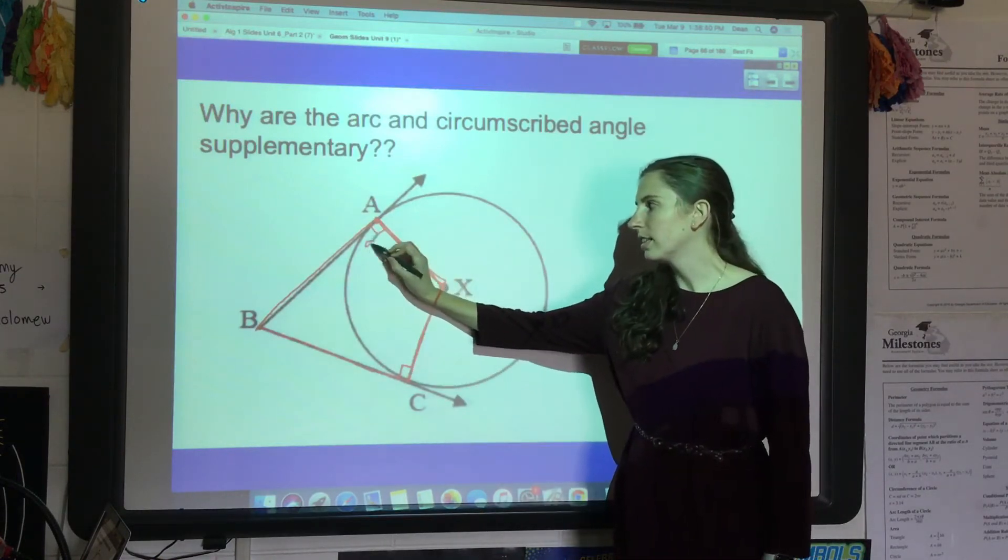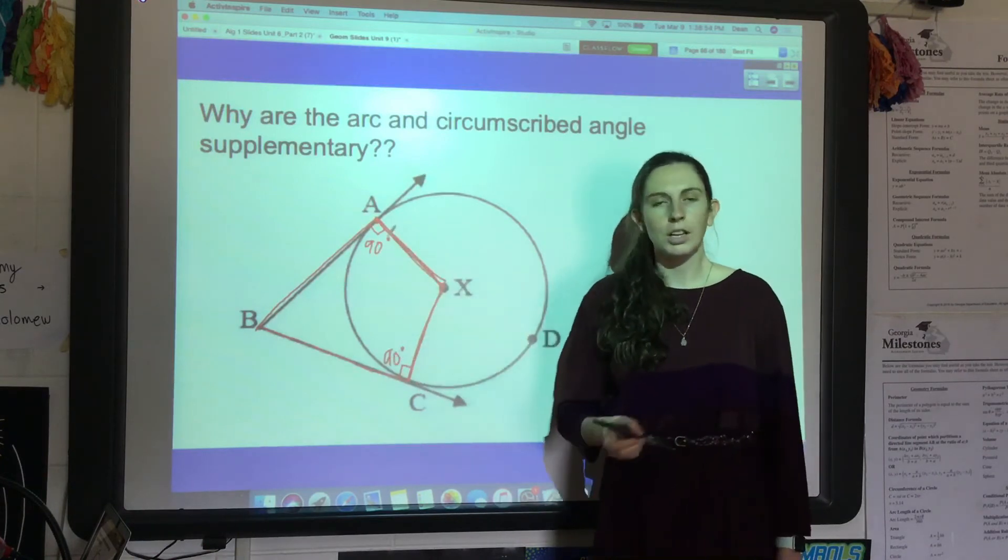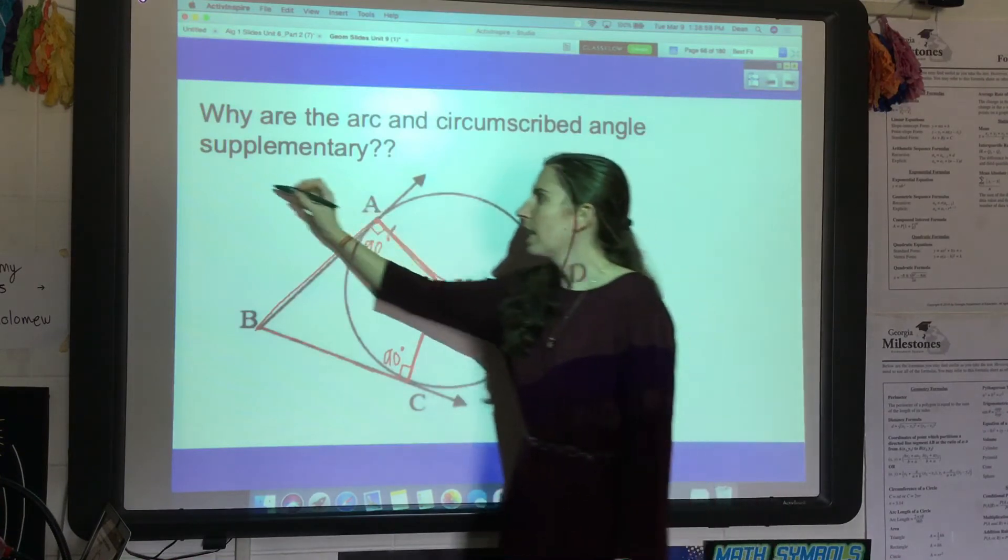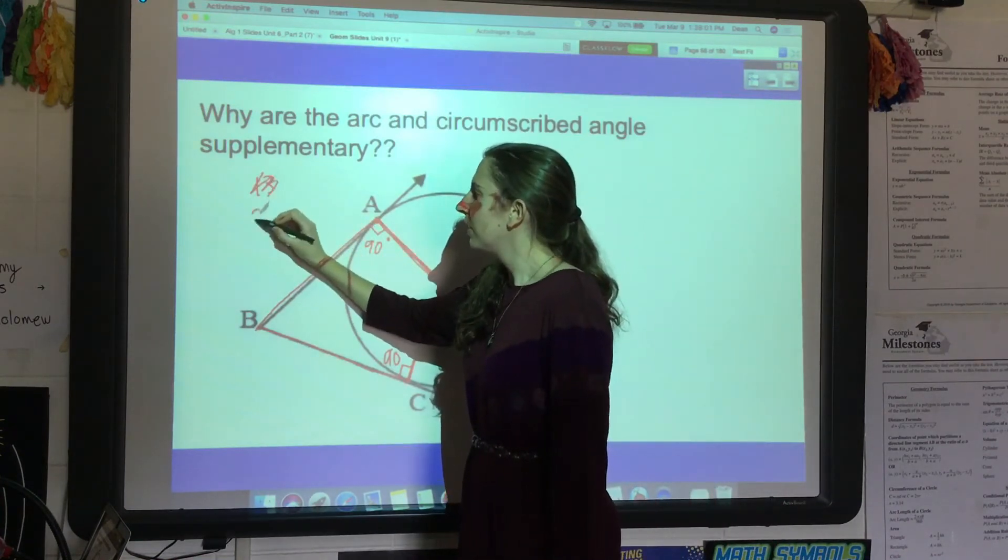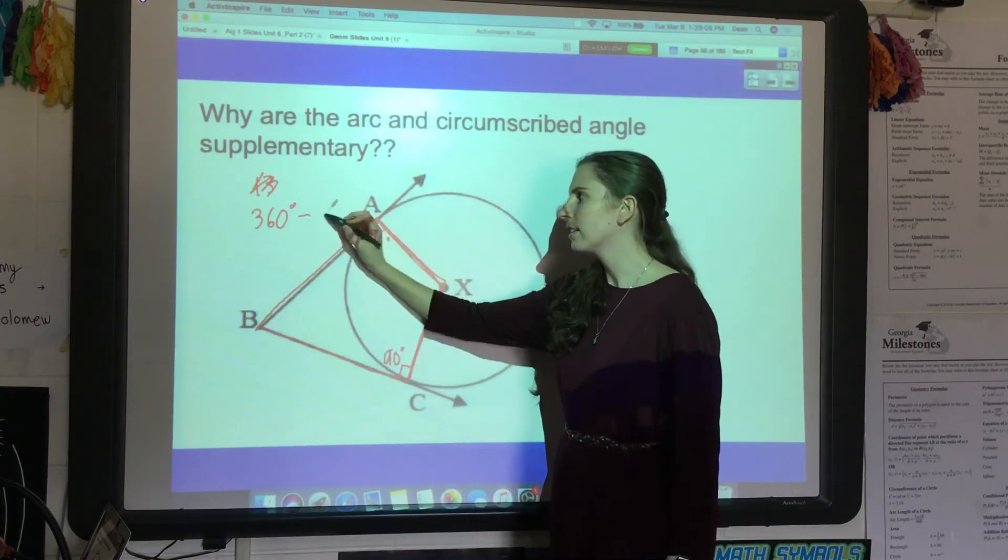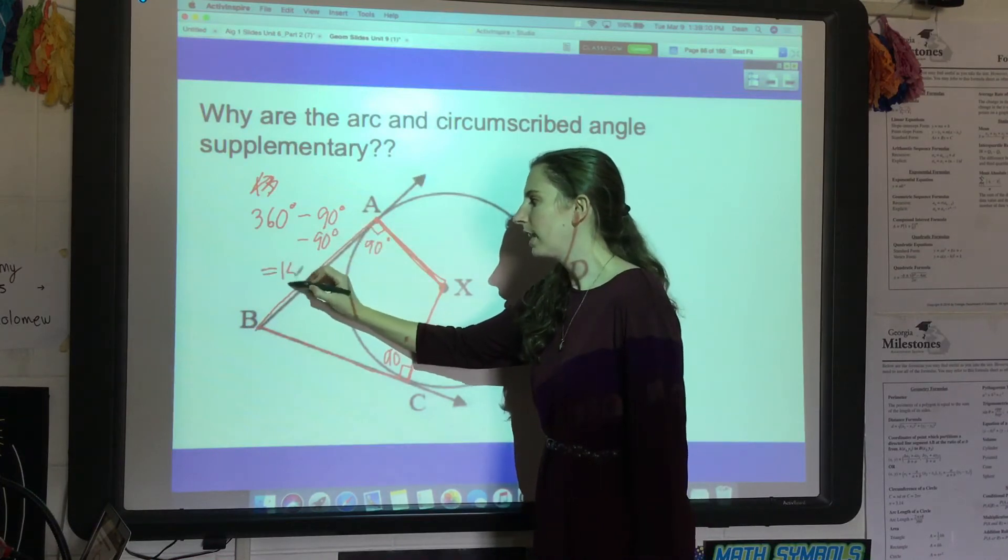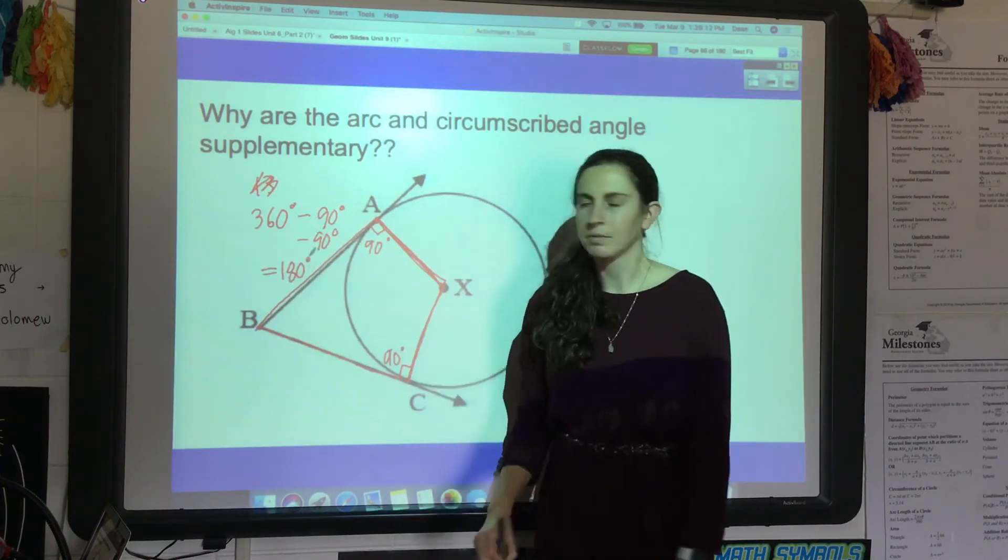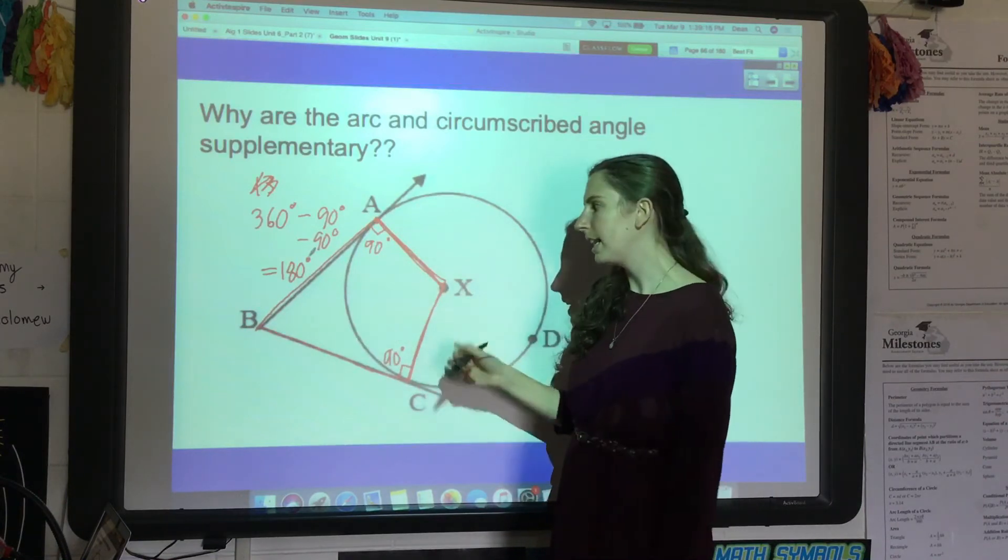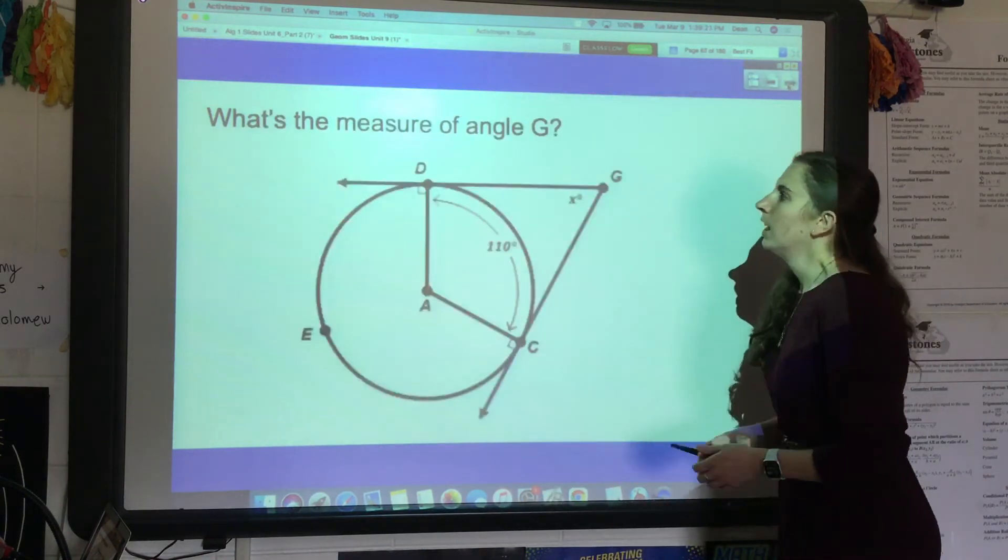I already know that this is 90 and this is 90. Just as a refresher, a quadrilateral has 360 total degrees. So if you take that 360 and subtract the two 90s that you already know you have, you're left with 180. That's why I don't know exactly what these two are, but I know they have to add up to 180, because 180 plus 180 would be 360.